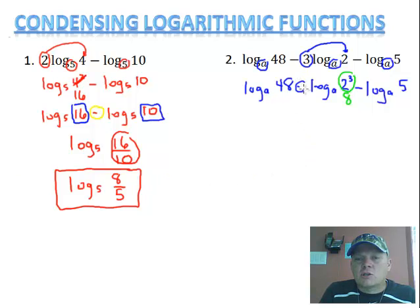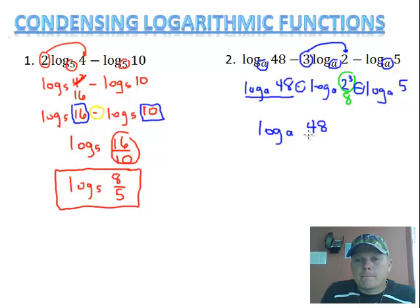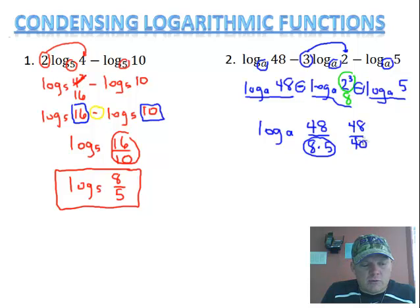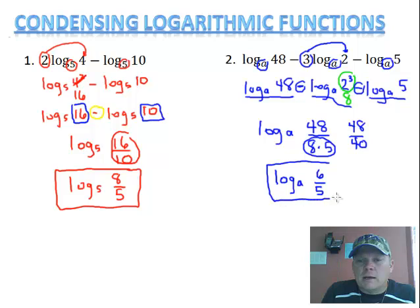Now the next thing is I have these subtractions. Anything that follows a subtraction is going to go on the bottom; anything that's positive is going to go on the top. Since they're all log base a, I'm going to write log base a. The positive 48 goes in the numerator. The second one is negative, so that 8 goes on the bottom. The last one is negative also, so I put times 5 in the bottom. 8 times 5 is 40, so that would be 48 over 40, which reduces — 24 over 20, 12 over 10, 6 over 5. So I rewrite my condensed version as log base a of 6 over 5.